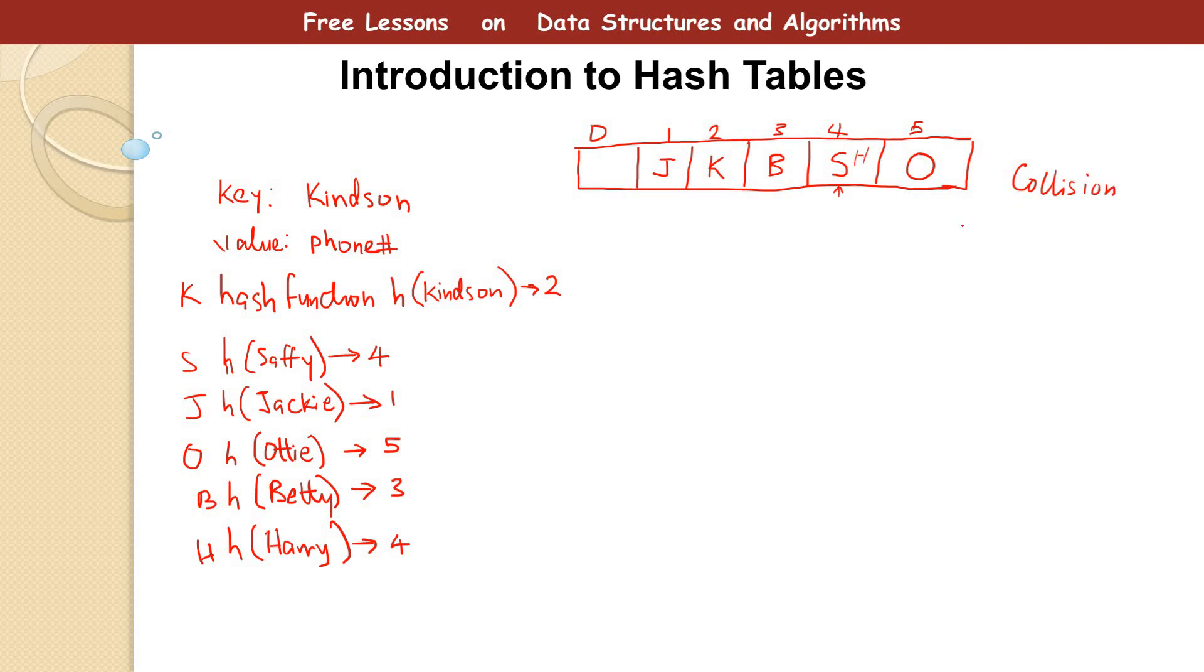And this is called collision. When collision occurs, it becomes a problem. The problem of hashing is always to solve a collision problem.